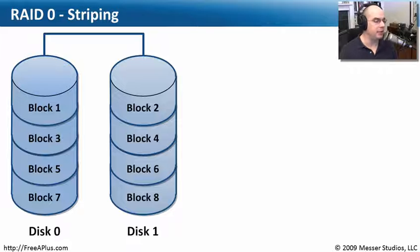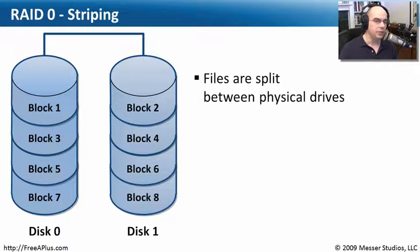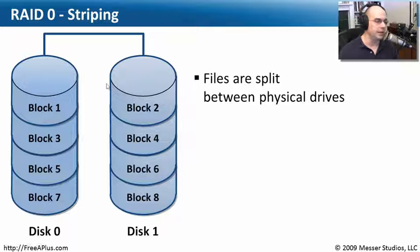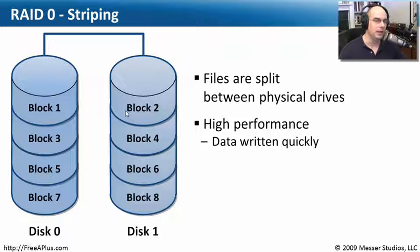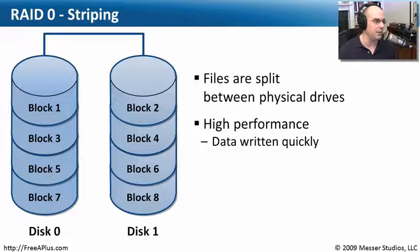Striping, just like the name sounds, is where you take data and split files between physical drives. Block one of the file goes on one disk, block two on another, and so on across more disks. You do this because you want very high performance. Often you'll have one disk on one hard drive controller and another on a completely separate controller, so you're only writing half the information to each disk — making reads and writes much faster. That's usually why you would stripe with RAID 0.